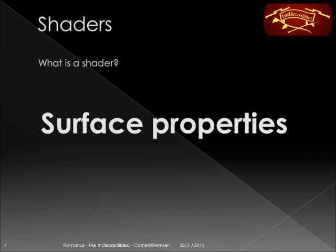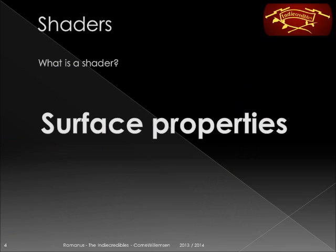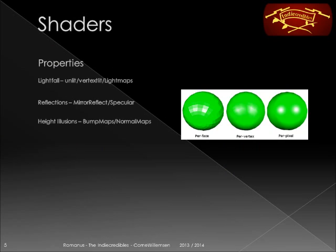What is a shader? A shader is a reflection of the properties of a surface. You can see this as the metal of this helmet here, which reflects a lot of light and has this metal kind of feeling, while a brick wall is more dull and does not reflect that much light. Other materials let light go through and make all kinds of effects with this light. So these are surface properties, and they can be defined by the shader that we're using.